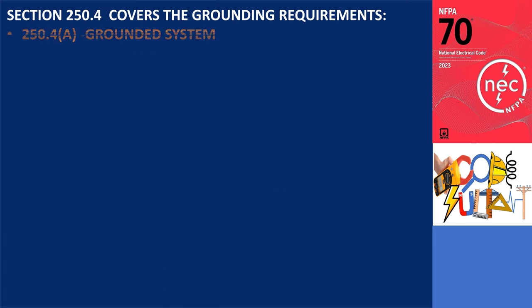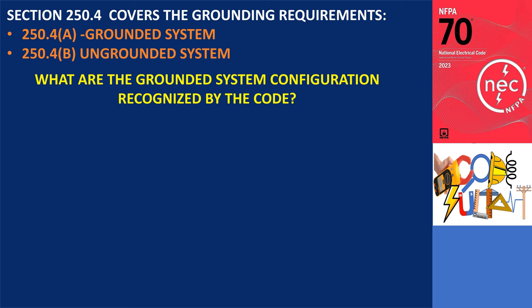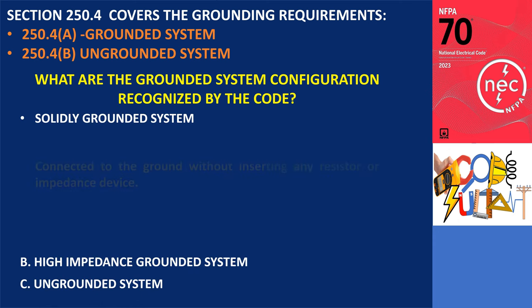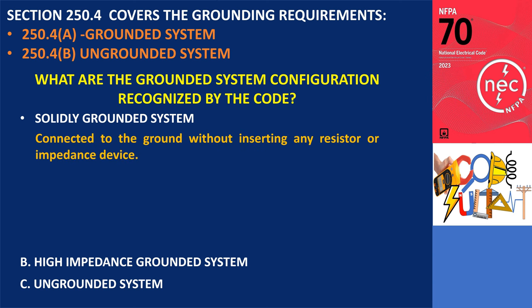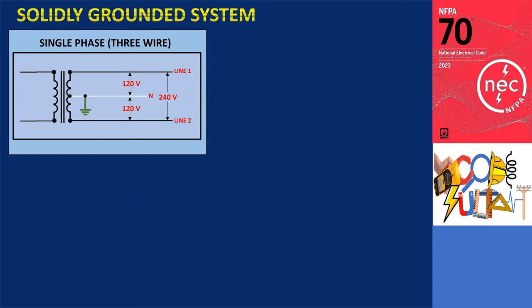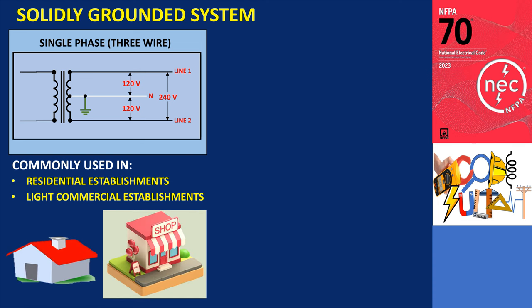This section covers the grounding requirements for grounded systems under Section 250.4A and ungrounded systems under Section 250.4B. There are different grounding systems recognized by the Code: the solidly grounded system and the ungrounded system. Solidly grounded is defined by the Code as connected to the ground without inserting any resistor or impedance device.